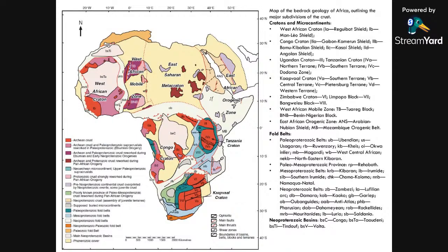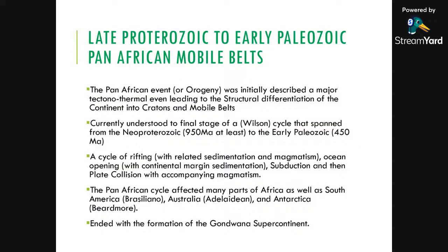This is a more detailed map showing the different structural regions of Africa. The mobile belts are late Proterozoic to early Paleozoic — the Pan-African events. Before plate tectonics was used to understand these things, the Pan-African event was usually described as a tectonothermal event, in the sense that you had deformation and thermometamorphism as a result of pressure and heat. It is this tectonothermal event that was thought to have led to the structural differentiation of Africa into cratons and mobile belts.